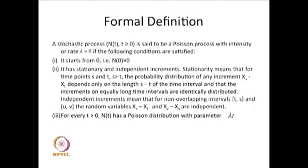For t > 0, N(t) is a Poisson distributed random variable with parameter λt, and the differences of random variables defined over non-overlapping intervals are independent. λt is the cumulative rate till time t.